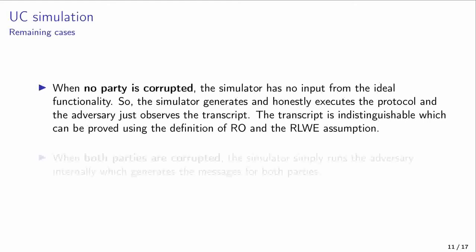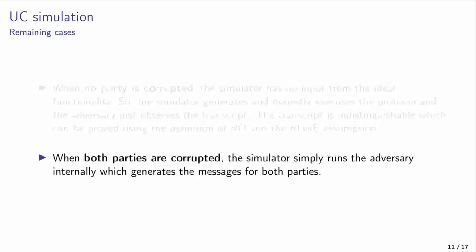There are two edge cases in a UC-proof simulation. First, when no party is corrupted, the adversary doesn't corrupt any party, so only observes the transcript. But the transcript of this protocol carries no information that allows it to distinguish its setting. This can be proven from the uncorrelation of inputs and outputs of a random oracle and from the RLWE assumption. Then, the other edge case is when both parties are corrupted, and here the adversary generates all the messages by itself. So the proof is concluded and the protocol is indeed UC-secure.